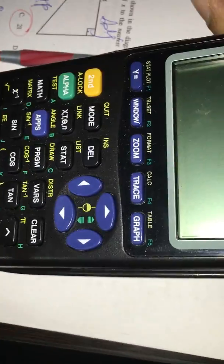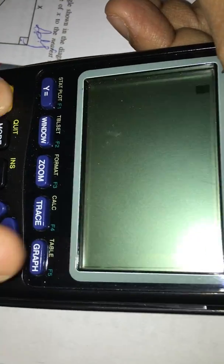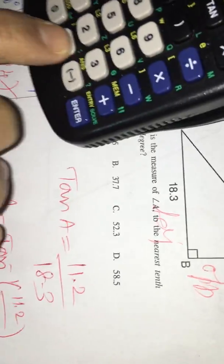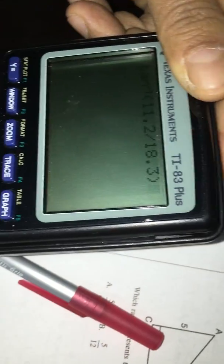Then, if I use the calculator, I can get, you see, second, tan. So I got tan inverse. Then, 11.2 divided by 18.3. Parenthesis close and push enter. I got 31.4.